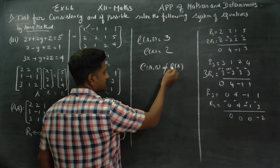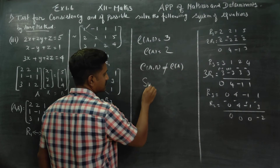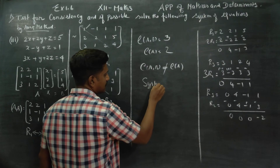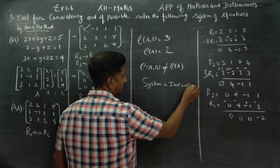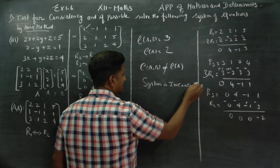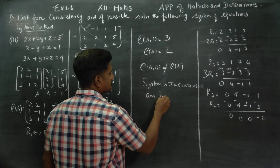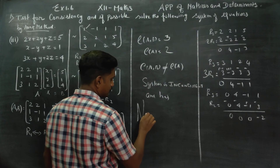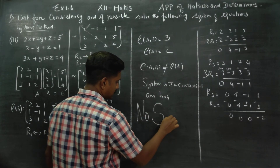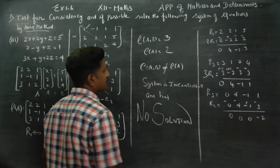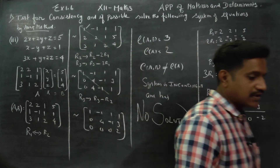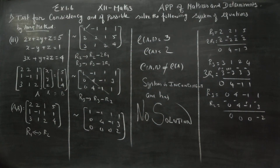Since rank of [A|B] is not equal to rank of A, the given system is inconsistent. That means there is no answer — it has no solution. When ranks are equal, the system is consistent; when they are not equal, it is inconsistent and has no solution.